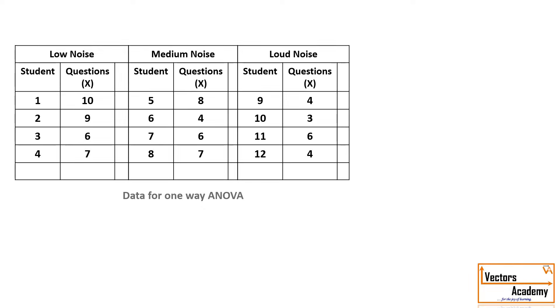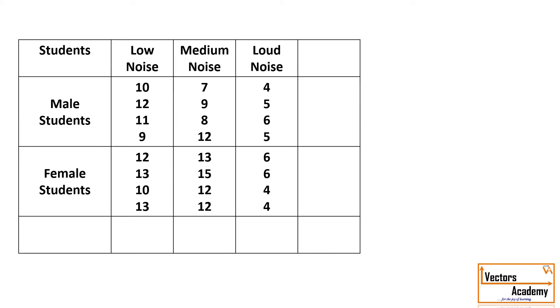Let us understand how to solve a two-way ANOVA and first look at the difference between a two-way ANOVA and a one-way ANOVA. In one-way ANOVA, the data has noise divided into three categories and the marks of the student in each category are noted. Whereas in two-way ANOVA, the noise is given in three categories where the students are also divided into two categories.